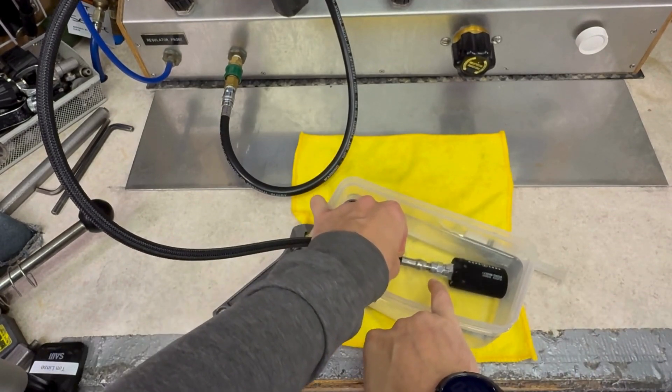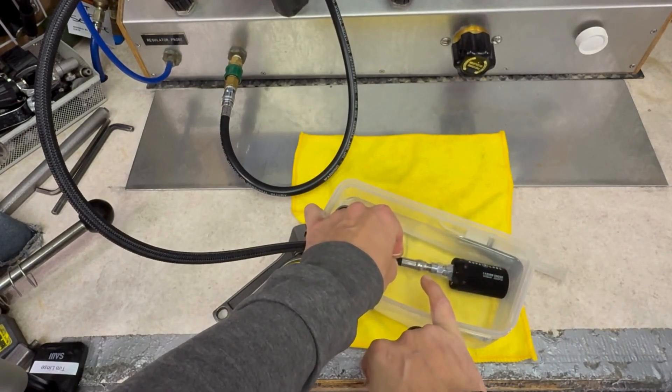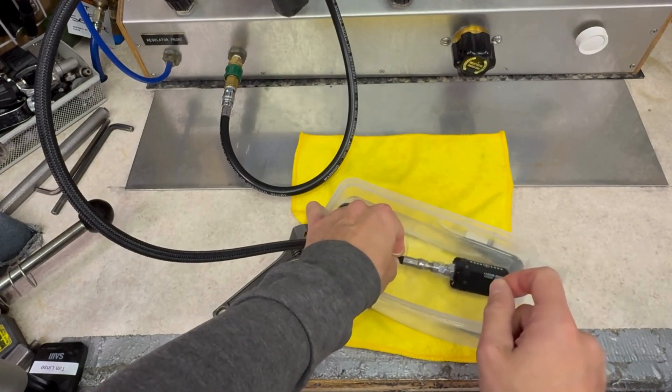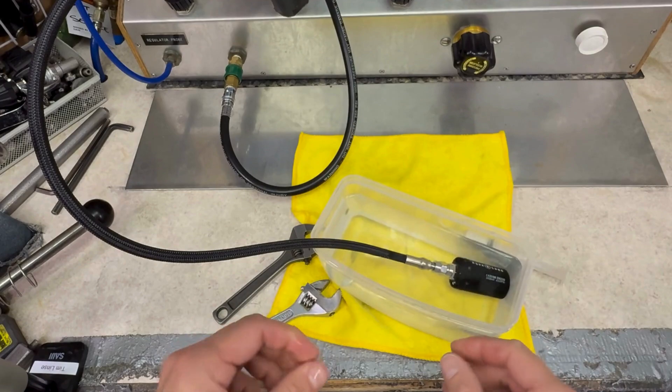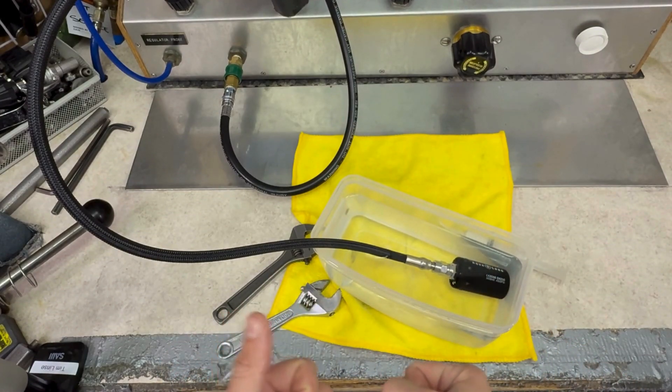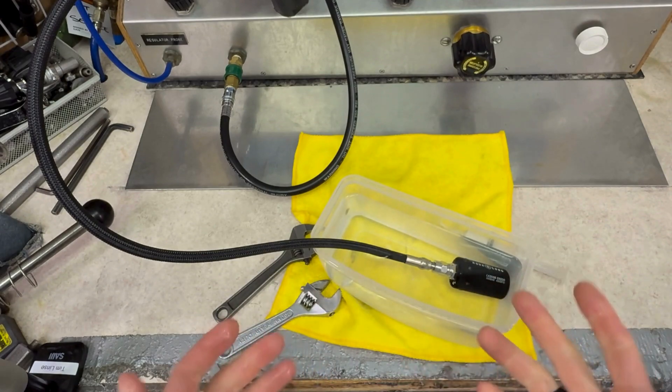Sometimes if you find that some SPGs just seem to be a little bit finicky and they'll still give you the tiniest little stream, what I found is just reseeding it. So go through this whole process again, tighten it down, pressurize it. That'll fix it.